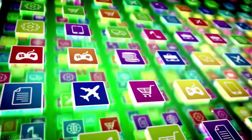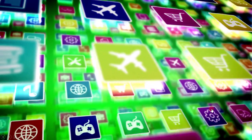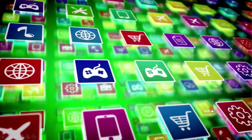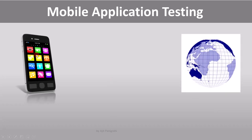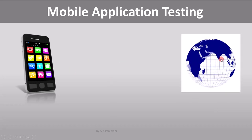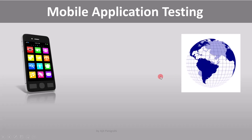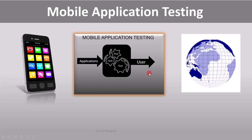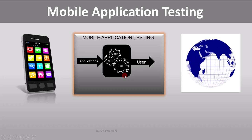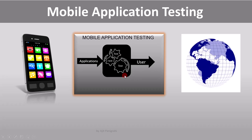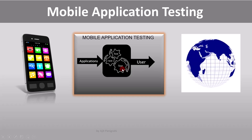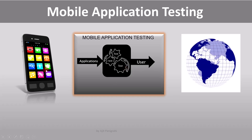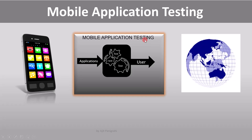Mobile application testing is the process every application developed for handheld devices has to go through. First, the developer develops these applications, and before giving it to the customer, it goes through the process which aims to find the defect in developed applications, and this process is called testing. And since we are testing mobile applications, we call it mobile application testing.